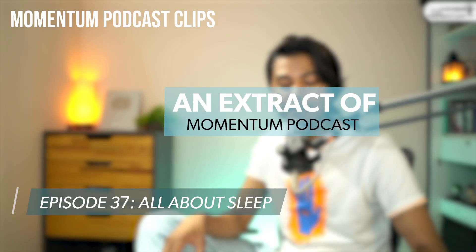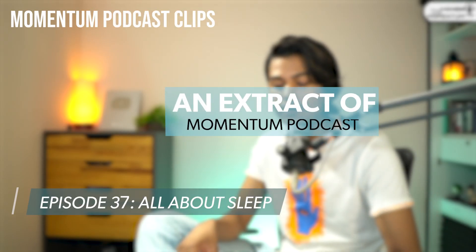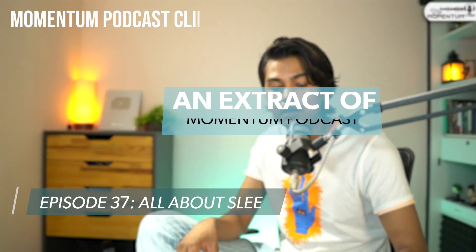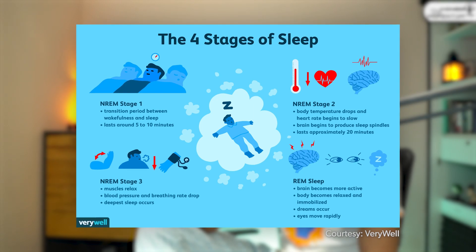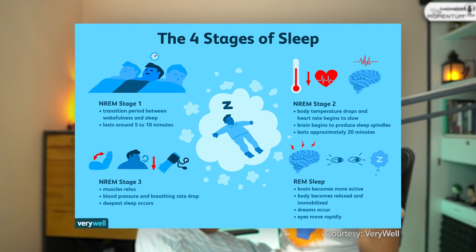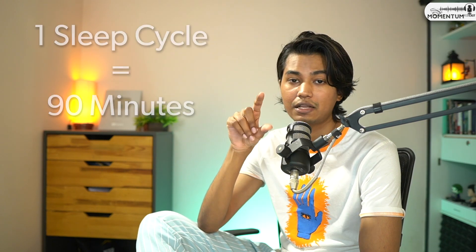We can't really talk about anything until we talk about the sleep cycle. A sleep cycle is basically one cycle of sleep, and your body does not sleep for only one cycle throughout the night. One cycle of sleep consists of four different phases, and completing one cycle generally takes a duration of one and a half hours, that is 90 minutes.